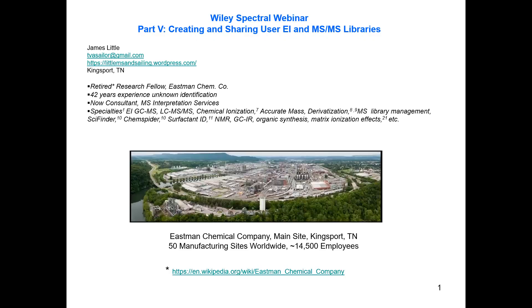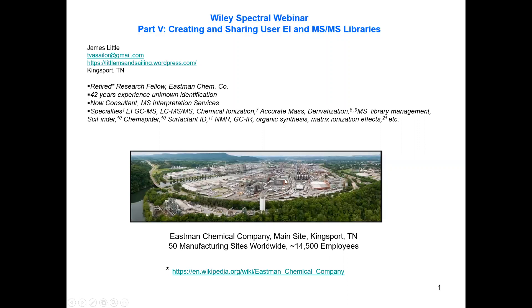Eastman Chemical Company — this is the Kingsport site, which I worked at for 42 years — is in Kingsport, Tennessee. About six to seven thousand employees are on this site, with additional ones being in 50 additional manufacturing sites around the world.